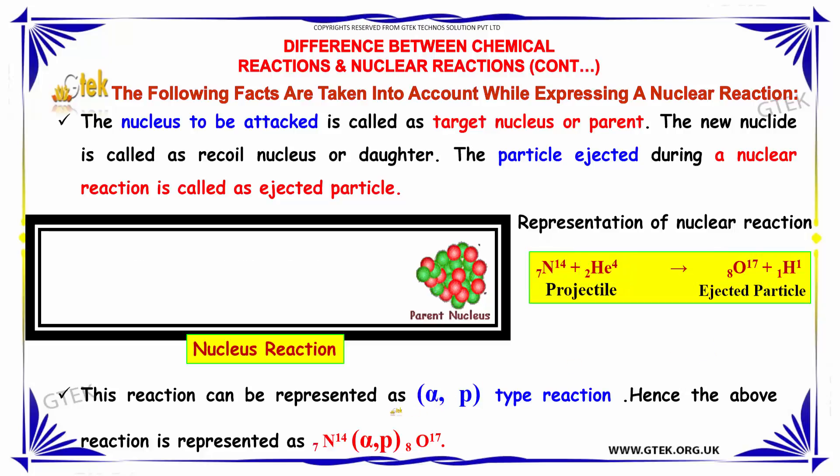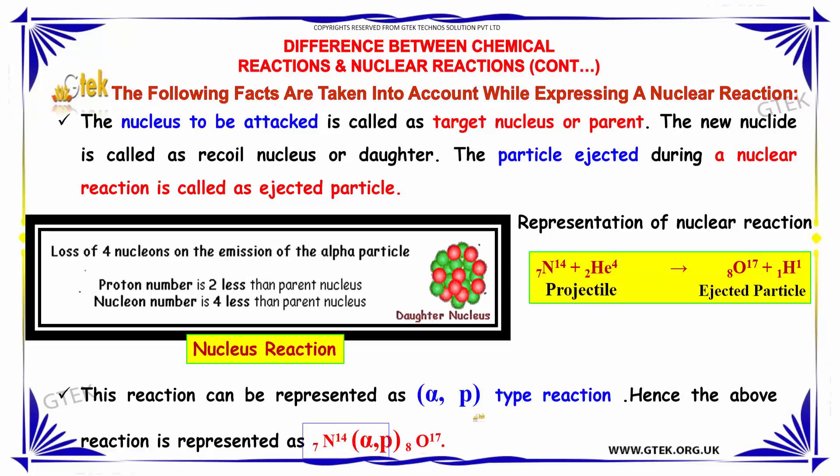This reaction can be represented as alpha comma p type reaction. Hence, the above reaction is represented as N14-7 alpha proton p of oxygen. This is the output. This is how the reaction can be represented.